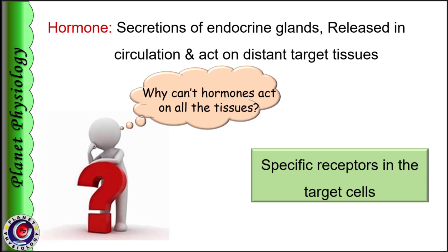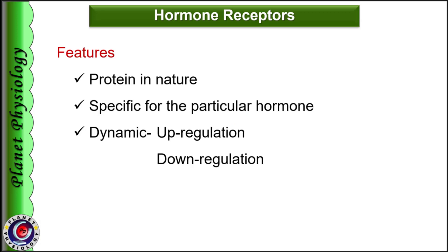The type of receptors will decide the action of the hormone. Receptors are protein in nature and are highly specific to the specific hormone. These are dynamic in nature, i.e., their number in the target tissue is not fixed. Receptors show either upregulation or downregulation.